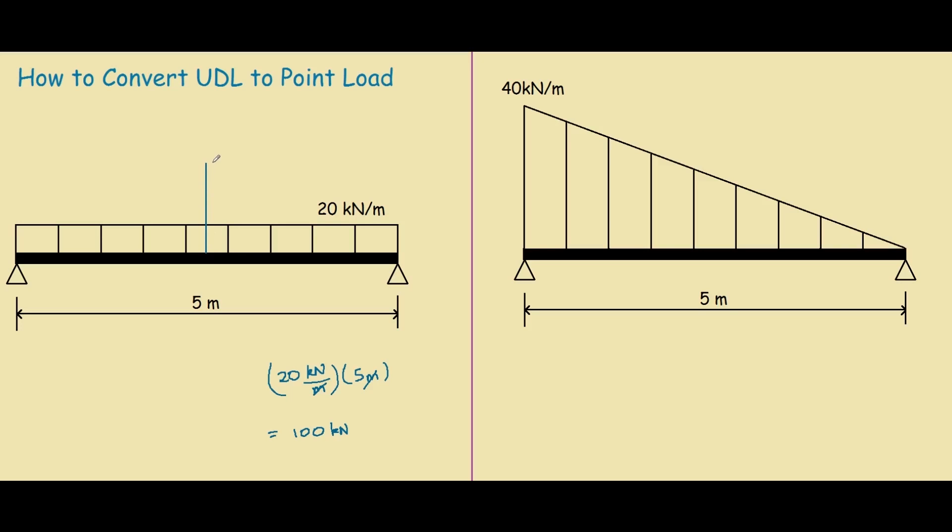So roughly, the point load would be here. And we represent this point load as higher than the 20 kN, so it would be 100. And this would be 2.5 meters from the edge of the beam.